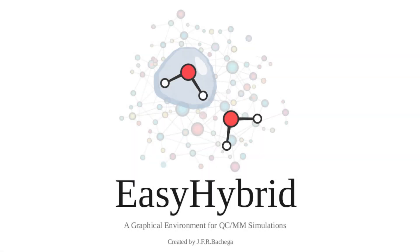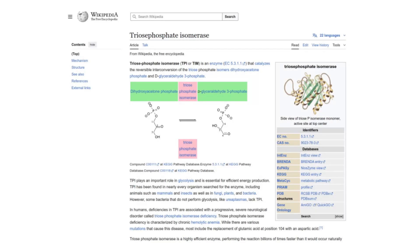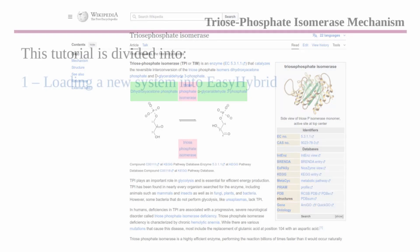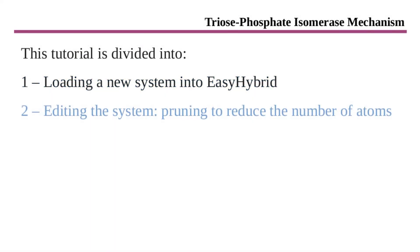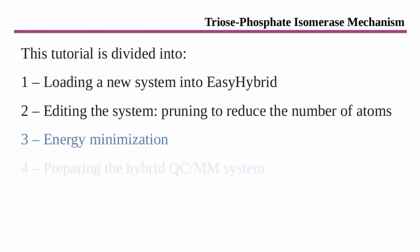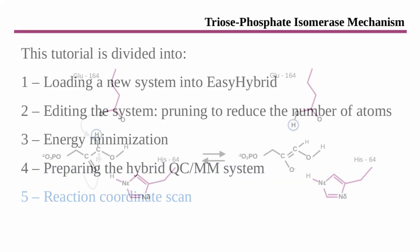This video tutorial uses the classic example of the enzyme triose phosphate isomerase, TIM, to cover the following aspects: how to load a system, edit, reduce the number of atoms, energy minimization, selection of a QC region, and the scan of the first step of the catalytic cycle.